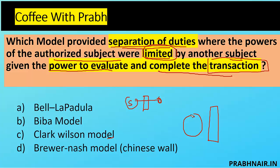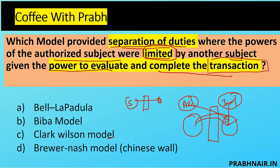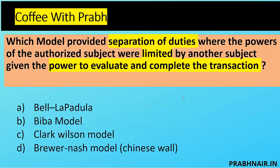Brewer-Nash is the Chinese Wall — whatever happens on one side will not conflict with the other side. For example, the auditor and implementer: the implementer implements controls but cannot audit, and the auditor audits but cannot implement. Another example is cloud: tenant 1 cannot access tenant 2's data and vice versa due to conflict of interest. But this question talks about evaluating and completing a transaction within the same process with separation of duty, so the answer is C — Clark Wilson.